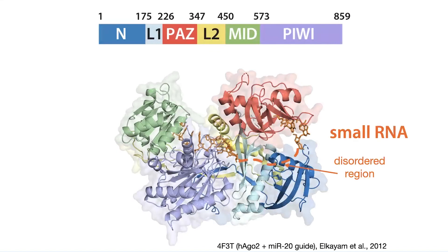The RNA is actually going to thread through an RNA binding channel in the protein. Part of the RNA in the structure is disordered, so I'm drawing it as a dashed line — the microRNA really does go that whole length, but we can't model the disordered region. The RNA is actually bound tightly at the five prime end in a pocket created by the MID and PIWI domains, then running through the channel of the protein, with the three prime end binding in the PAZ domain.